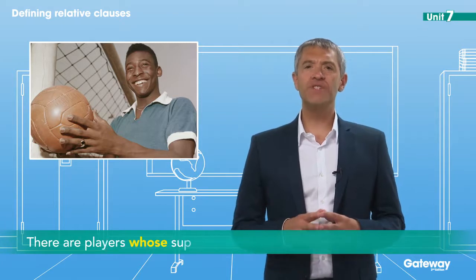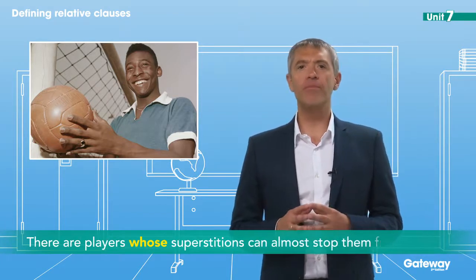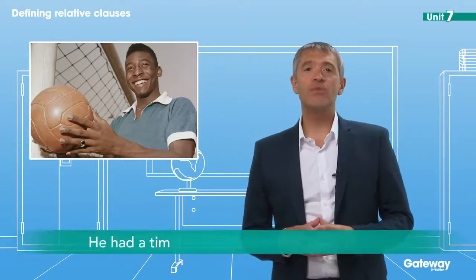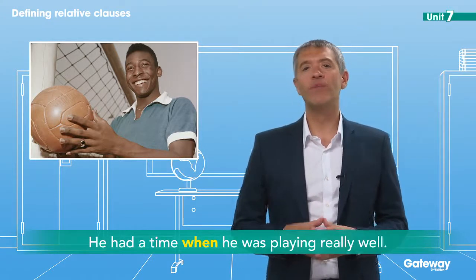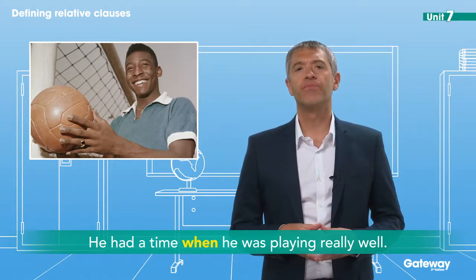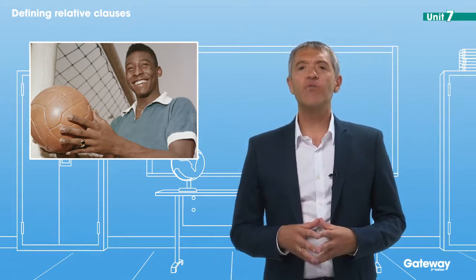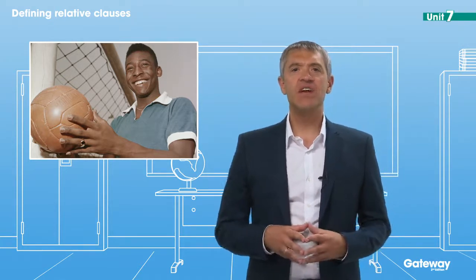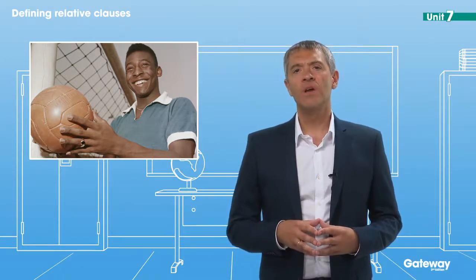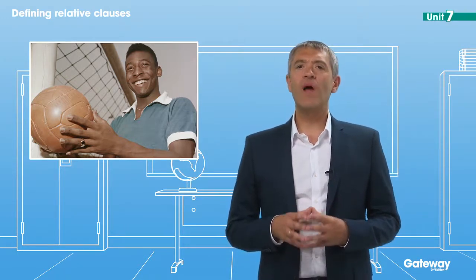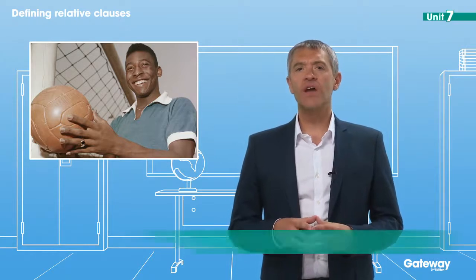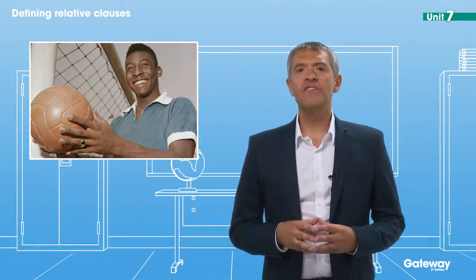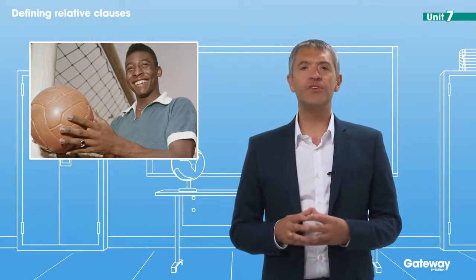There are players whose superstitions can almost stop them from playing. Take Pelé. He had a time when he was playing really well and scoring lots of goals. Then he gave away his favourite shirt to a fan. Just after that, he started playing badly. He decided that to play well again and score goals, he needed the lucky shirt which he'd given away. He told a friend to find the fan and get his shirt back.